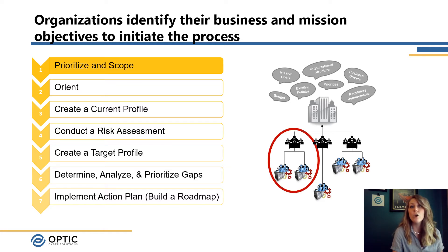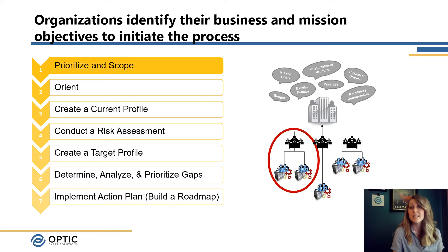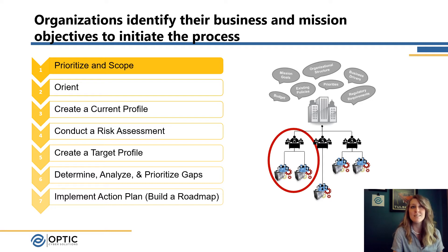Having those conversations helps scope things like our regulatory requirements. If I know I just want to look at a specific region, I don't need to worry about regulatory requirements outside of that region. Or if I'm looking at a specific line of business focused primarily on a lot of sensitive data, I know I need to protect the confidentiality of that data, and it may be more important than protecting its integrity or availability. So pausing in this step one — it may seem simple, but it's really important for understanding what are we assessing and what are the goals here.